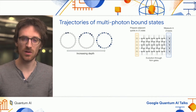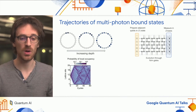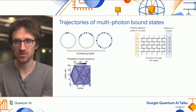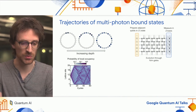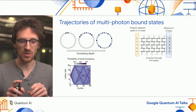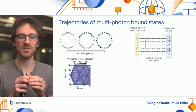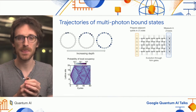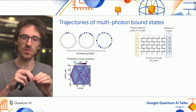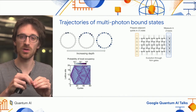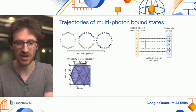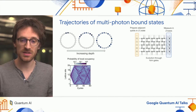A single particle will just move along the chain and create a pattern. Here you can see the evolution of a single excitation: it moves along the ring and creates a cone, which is the light cone of the single excitation moving along the chain.